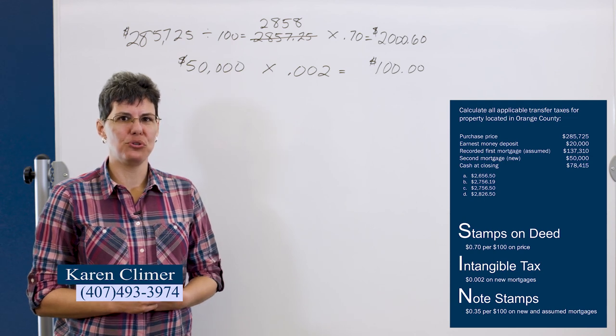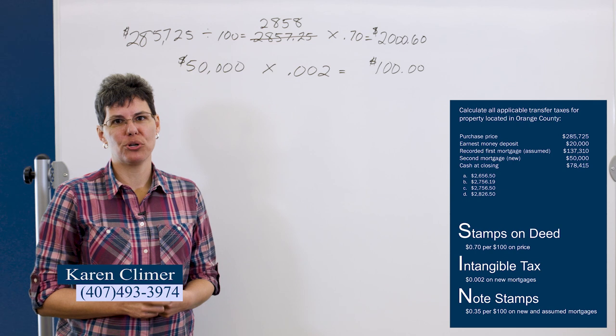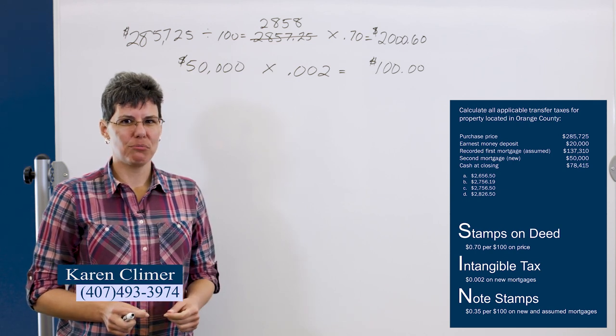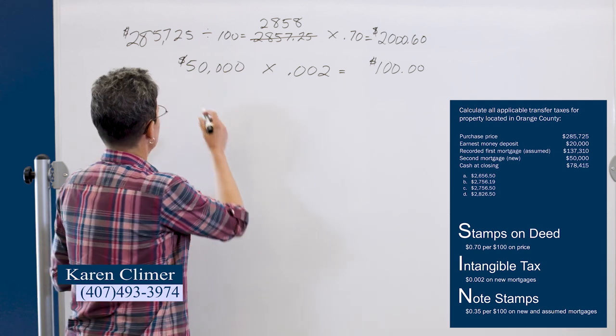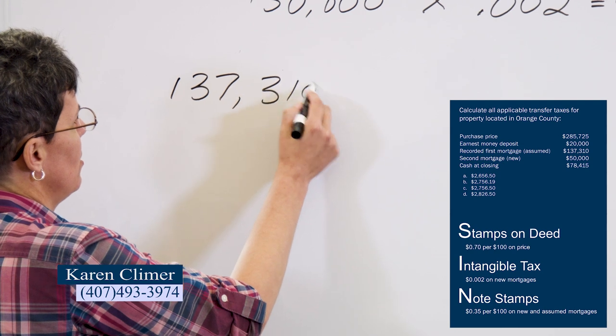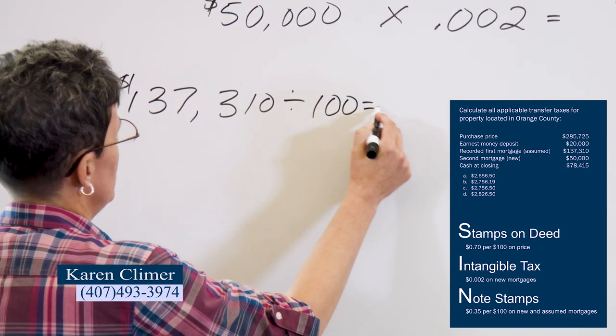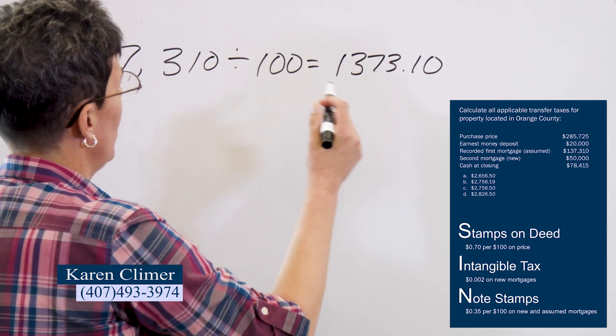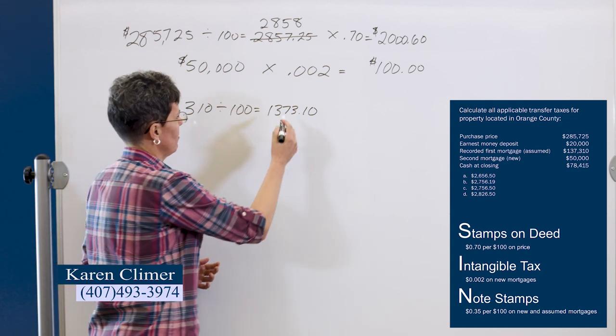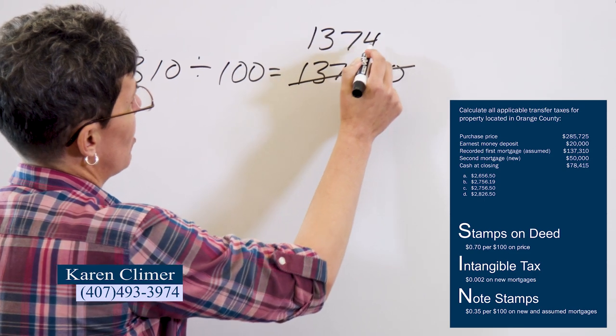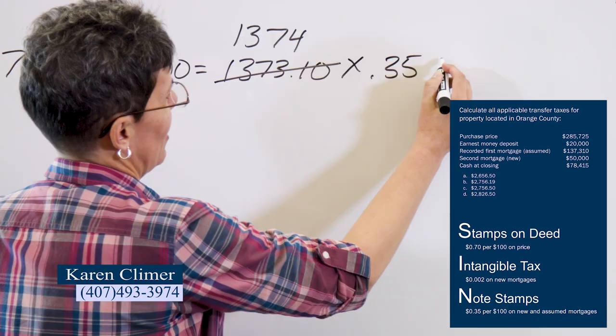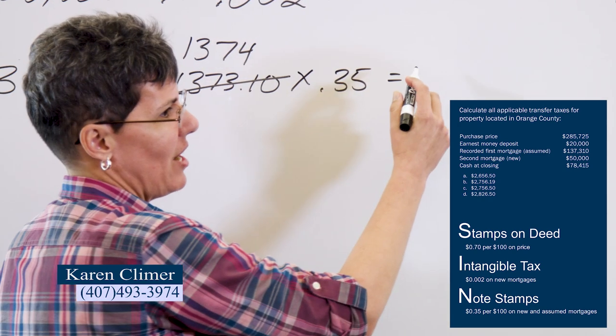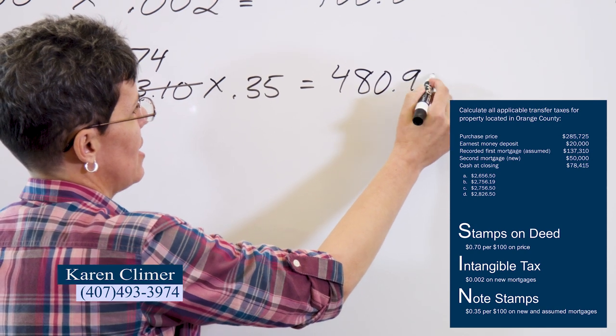The next thing we have is the note stamps, the N. So that's on new and assumed mortgages. And it's going to be 35 cents per hundred dollars. If you buy property subject to the mortgage, this tax is not due. It's only due on new and assumed mortgages. And this is a stamp like we had before. So we're going to buy part of a stamp. So you're going to round it up to 1374. And these stamps cost 35 cents each. Don't forget to clear your calculator. So 1374 times 35 cents is going to give us $480.90.